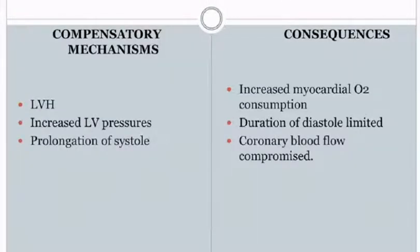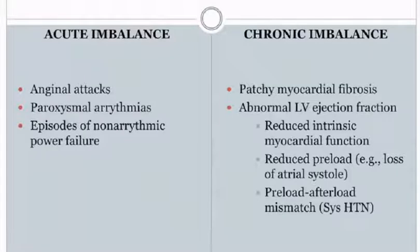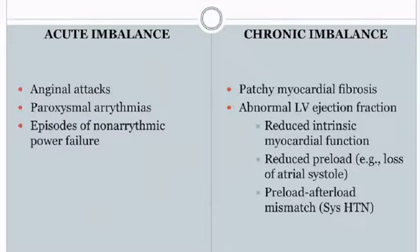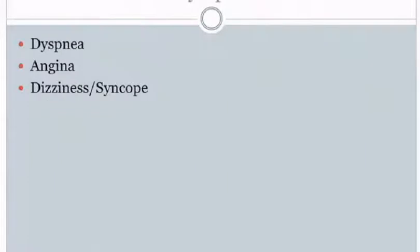Compensatory mechanisms include LV hypertrophy, increased LV pressures, and prolongation of systole. Consequences include increased myocardial oxygen consumption, limited diastolic duration, and compromised coronary blood flow. Acute imbalance may cause anginal attacks, paroxysmal arrhythmias, and episodes of non-arrhythmic power failure. Chronic imbalance leads to patchy myocardial fibrosis, abnormal LV ejection fraction, reduced intrinsic myocardial function, reduced preload, and preload-afterload mismatch.